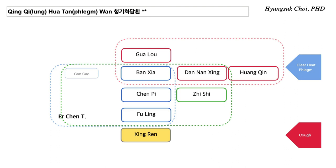Wet coughing. So when you find a patient with wet coughing, you can use Qing Qi Hua Tan Wan — for bronchitis, early stage of pneumonia, or viral pneumonia. You can use this for coronavirus infection too. Because Nan Xing, Ban Xia, Gu Lu all melt down phlegm, and Xing Ren suppresses coughing, and Huang Qin subsides the inflammation. So this is quite a strong formula.